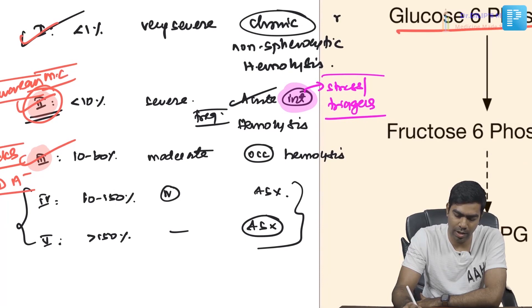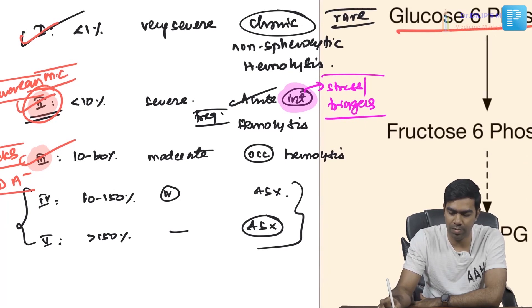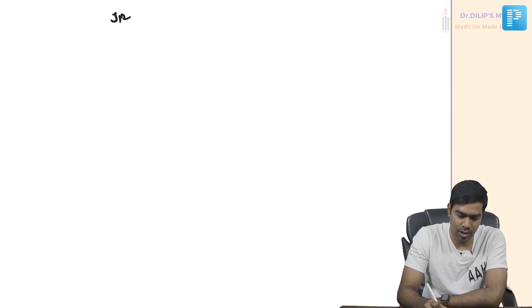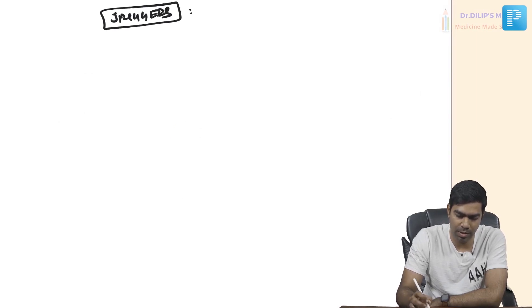Class 1 is quite rare — these patients have chronic hemolysis with or without triggers. So these are the main variants of G6PD deficiency. Now, there are specific triggers and precipitating events that can provoke hemolysis.